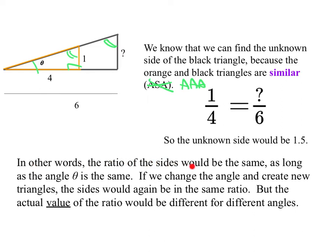In other words, the ratio of the sides would be the same as long as the angle theta is the same. If I had gone out, instead of 6, I had gone out 16, then I would get a triangle that was four times as large, and so the side would be four times as large.